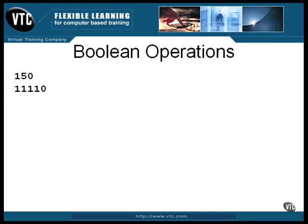That doubles the number to 30. So shifting a binary value to the left one position is the same as multiplying it by 2, and shifting a binary value to the right one position is the same as dividing it by 2.